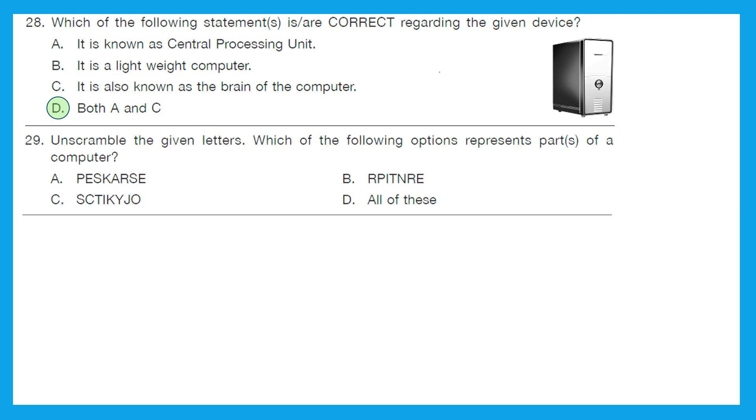Question 29: Unscramble the given letters. Which of the following options represent parts of a computer? So let's first unscramble them and find out what are they? Option A will give you speakers and it is a part of the computer. Option B will give you a printer. That is also a part of a computer. Option C will give you joystick. It is also a part of computer. And option D is all of these. For us the right answer should be option D. All of these are parts of a computer.